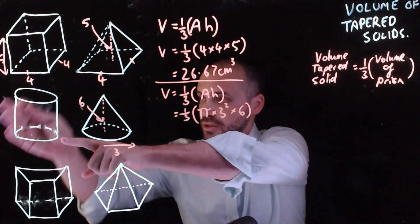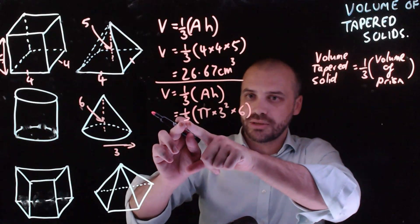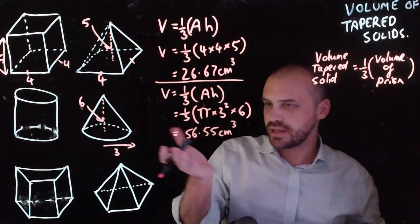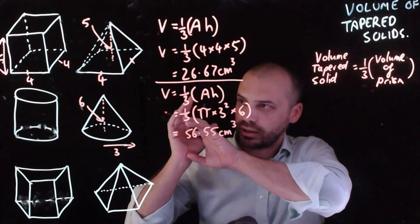This bit is going to get me the volume of that. Multiplying it by one-third is going to get me the volume of the tapered solid. And there we are. There's my volume for my cone.